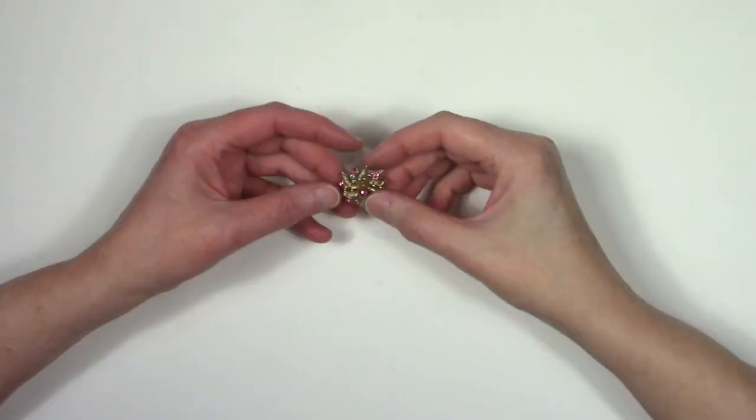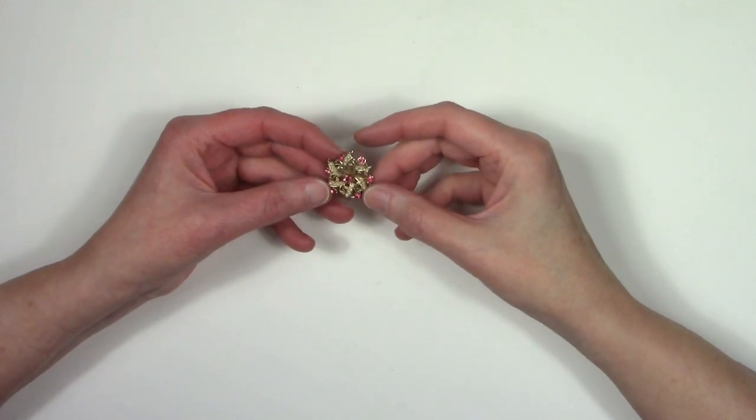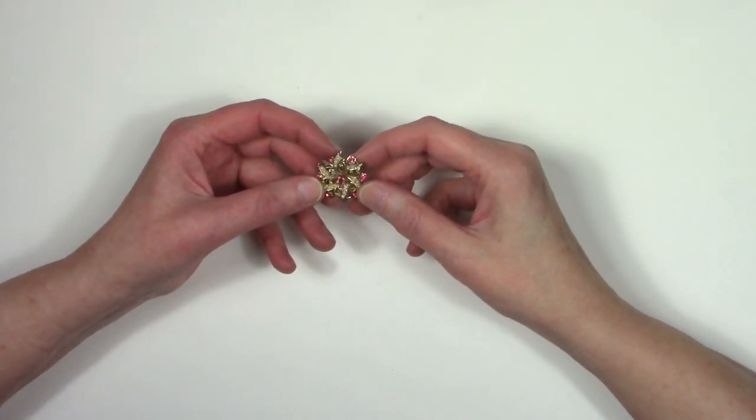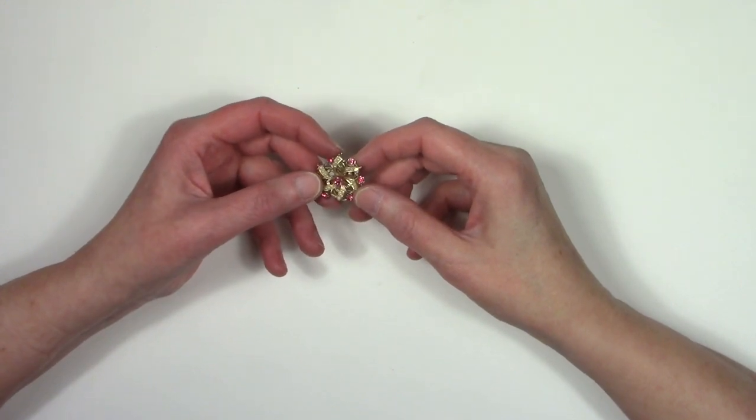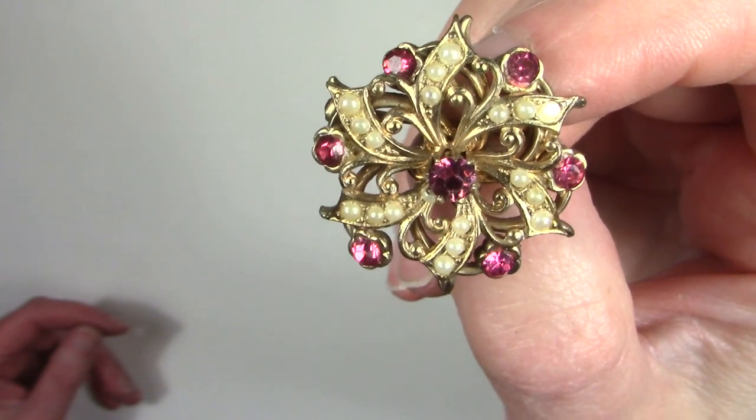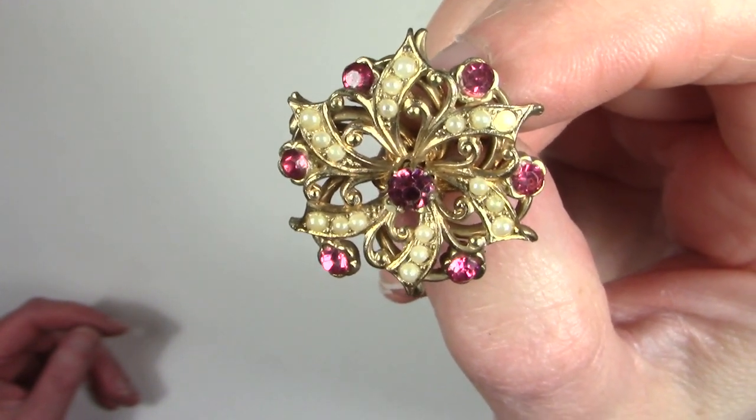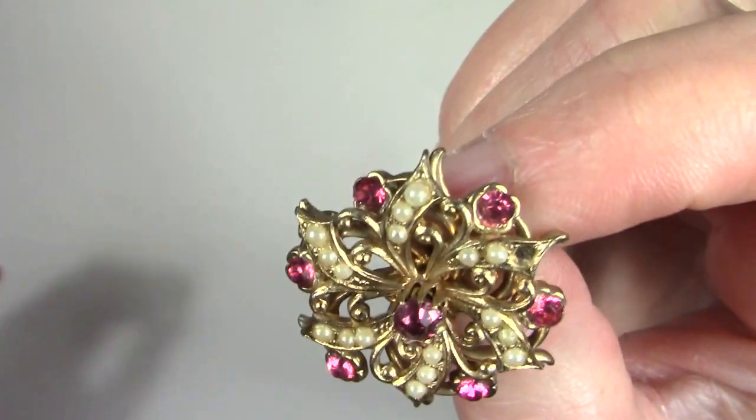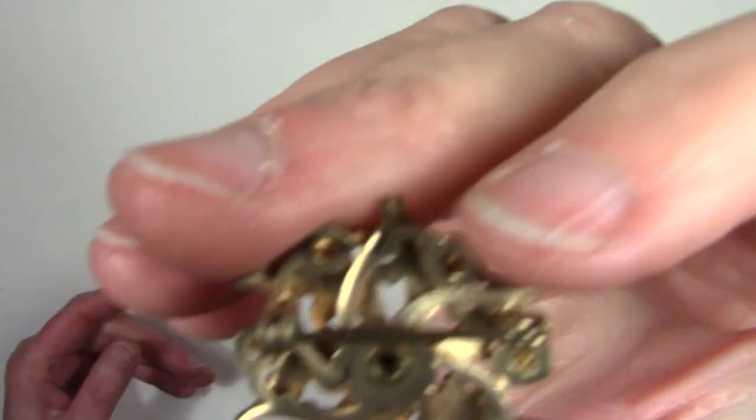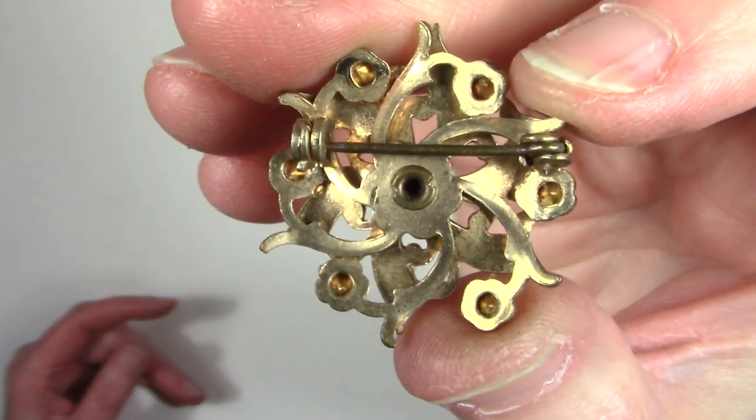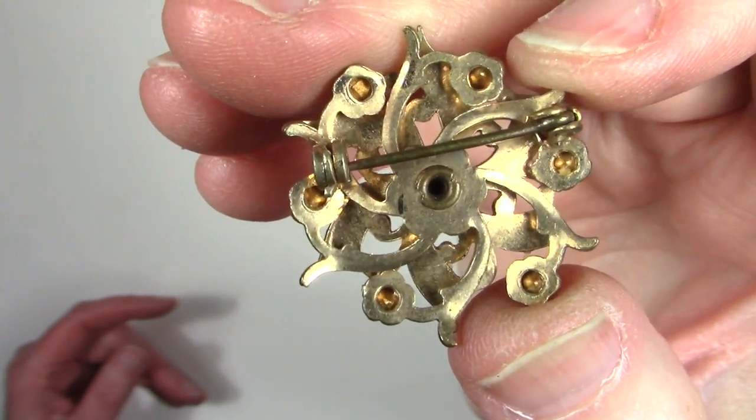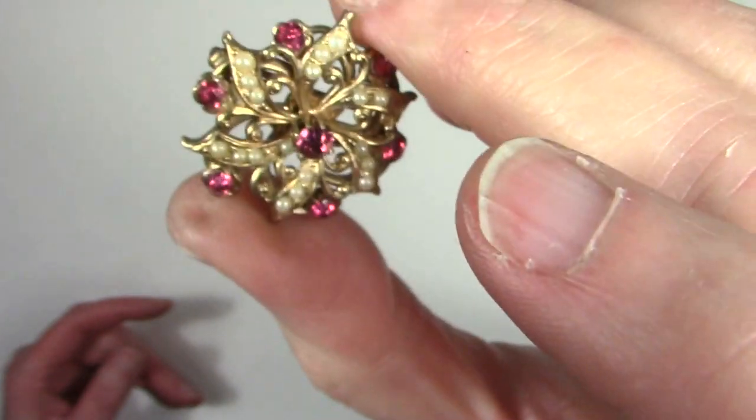All right, so this looks like a vintage pen without even looking at the back because of the color of the pink and then the design. So we'll take a closer look. Gosh, it's just gorgeous. It's amazing how much detail there is in such a small piece. All right. And then we have the back unsigned. Look at the grommets. 1960s, maybe a little earlier. Cool.